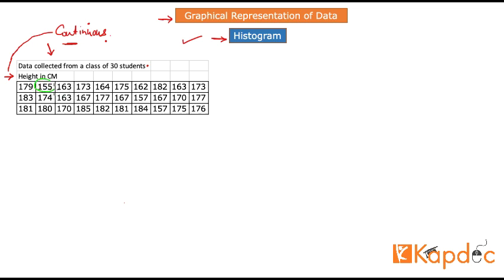Now, why is grouping relevant in a histogram? Take a look at this data set — we have 30 observations, the lowest being 155 centimeters and the highest being 185. If you were to analyze all 30 observations as individual data elements, it will not give you any meaningful information. Instead, we divide those 30 observations into smaller chunks, and each smaller chunk is called a group. That way you can create a frequency plot showing how the heights are distributed.